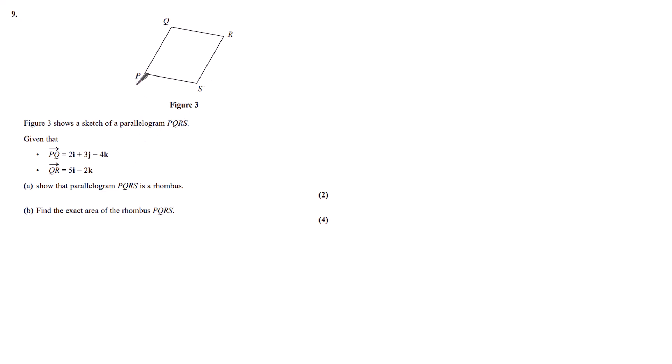So what we want to do is show that the length of PQ is equal to QR, and then we will have a rhombus. So we can find the modulus of PQ. The modulus of PQ is the square root of 2 squared plus 3 squared plus minus 4 squared, which gives us a value of root 29.